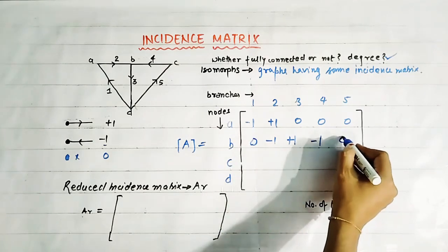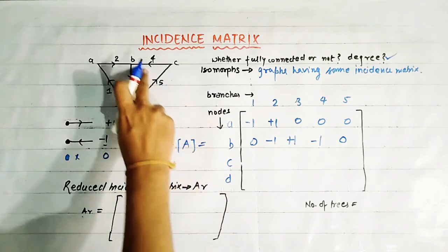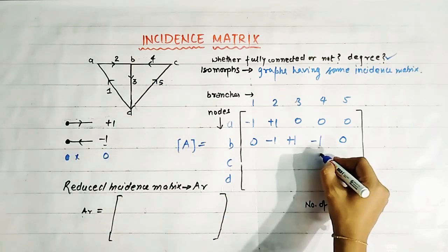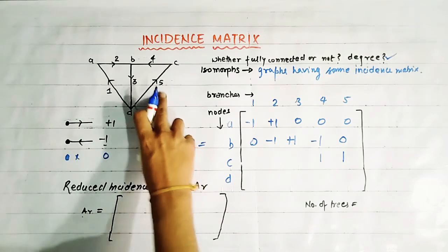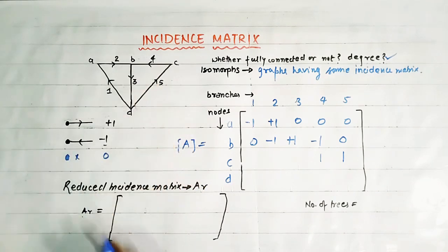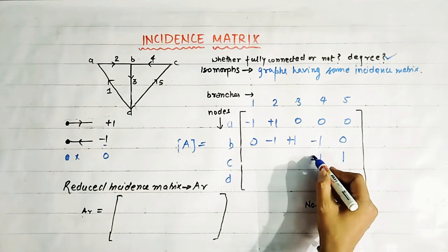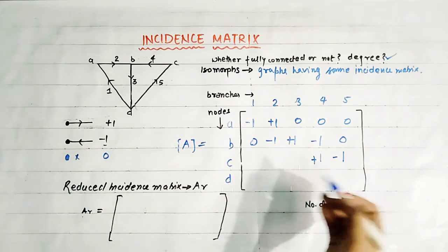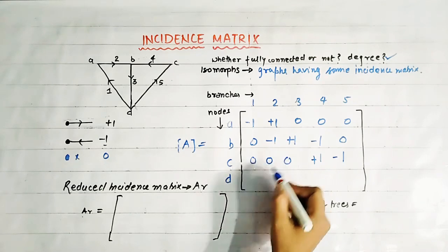At node C, branches four and five are connected. Branch four is leaving the node, so it is plus one. Branch five is entering the node, so it is minus one. Remaining branches are not connected, so we put zero.